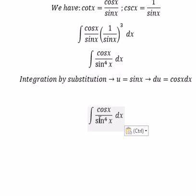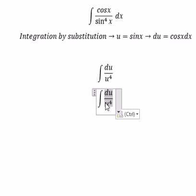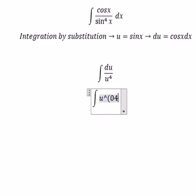We change this to u to the power of negative 4. Cosine x dx becomes du, so we get u to the power of negative 4 du.